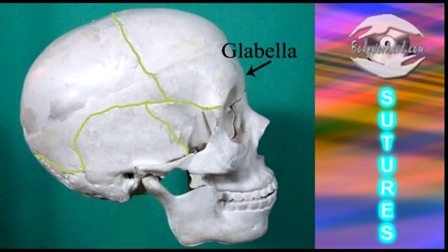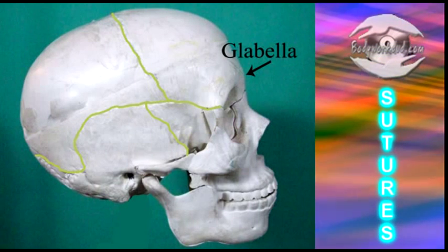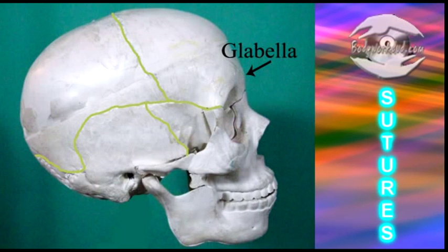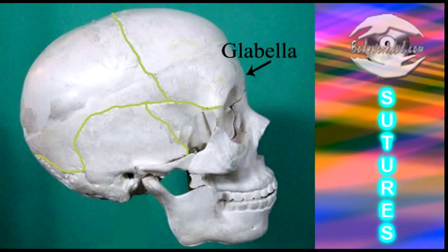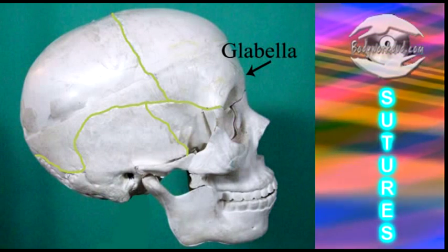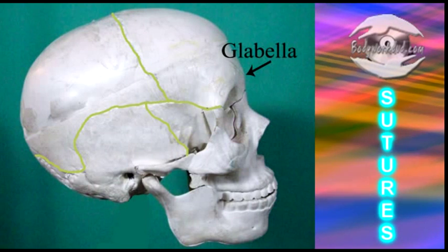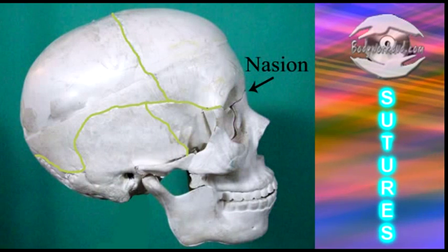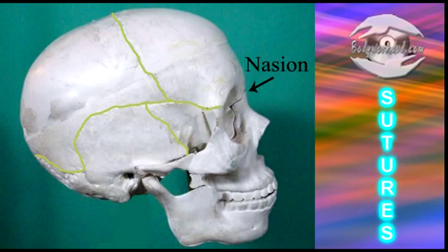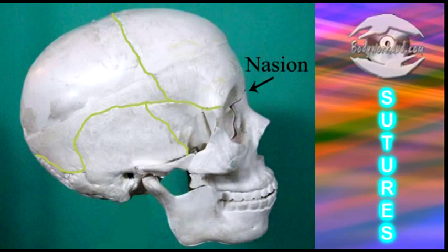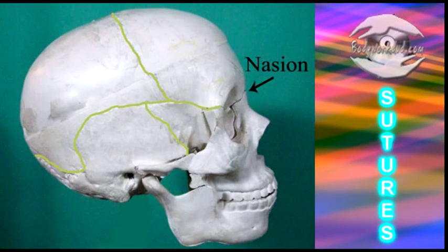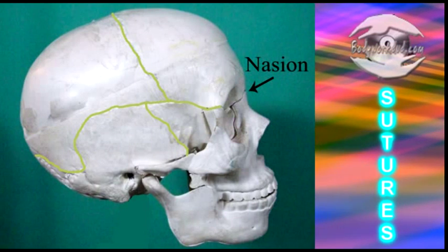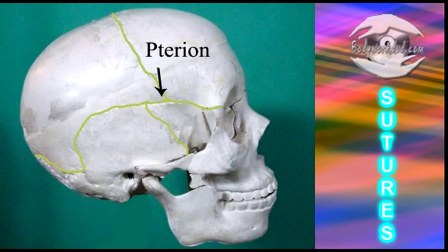The glabella, located between the superior ciliary arches — it's a rounded median elevation of bone. The nasion is in the mid-sagittal plane, where the frontal and nasal bones meet.